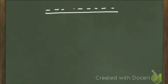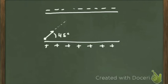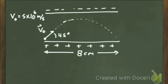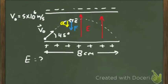Let's do an example with a parallel plate capacitor. An electron is shot inside with a velocity of 5 times 10 to the 6 meters per second at an angle of 45 degrees, and it lands on the positive plate at a distance of 8 centimeters from the initial location. We want to find the strength of the electric field. Since the electric field points upward from positive to negative plate, the force on the electron is downward, and so is the acceleration.